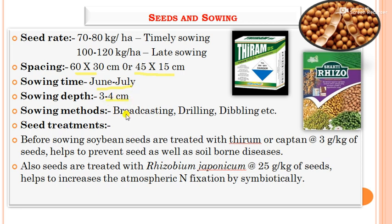Sowing time is June to July, sowing depth is 3 to 4 cm. Sowing methods include broadcasting, drilling, and dibbling. For seed treatment before sowing, soybean seeds are treated with thiram or captan at 3 grams per kg of seed to prevent seed and soil-borne diseases. Seeds are also treated with Rhizobium japonicum at 25 grams per kg of seed, which is used as a bio-fertilizer to increase atmospheric nitrogen fixation symbiotically.